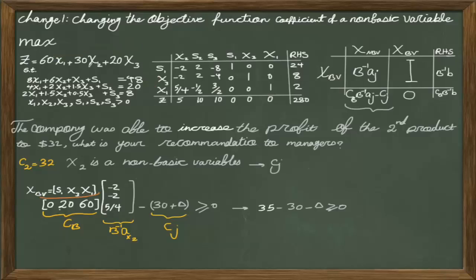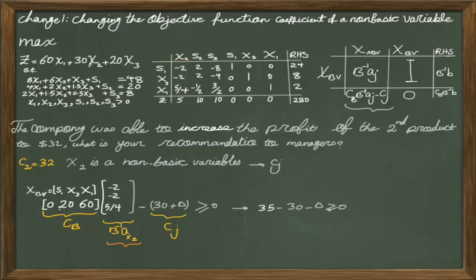The second part of the formula is B-inverse times A related to X2. Since B-inverse times A_J is already calculated in the final table, we can simply copy the column under X2 from the final table — that vector is B-inverse multiplied by the original column vector. So we have CB times B-inverse times A_J. For CJ, rather than substituting 32 directly, it's common to use 30 plus delta as the new CJ and find the range of delta for which the coefficient remains positive.